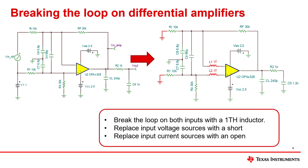First, let's break the feedback loop. This is done by inserting a 1 teraHenry inductor between the amplifier's inputs and the feedback connections for both the inverting and non-inverting nodes. You can see this modification shown on the right.